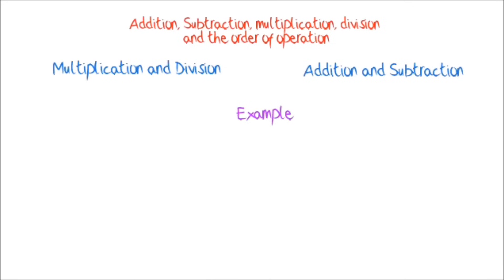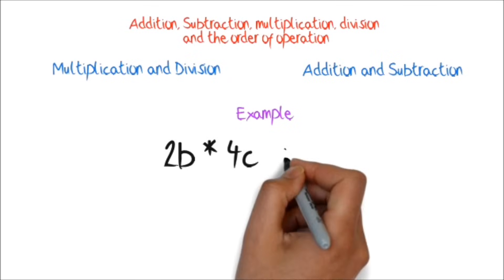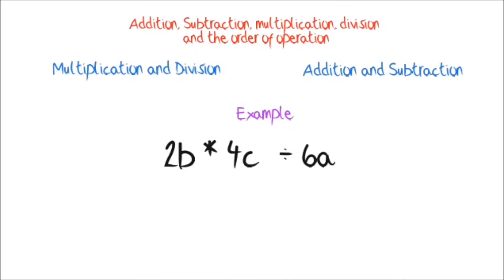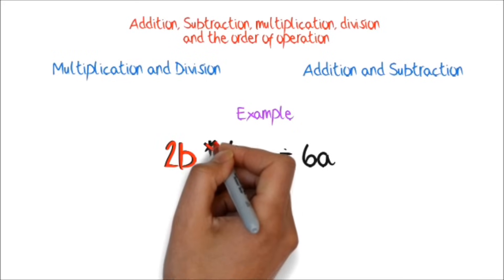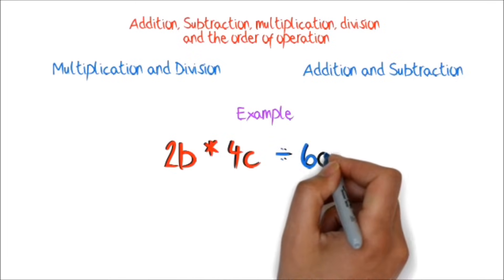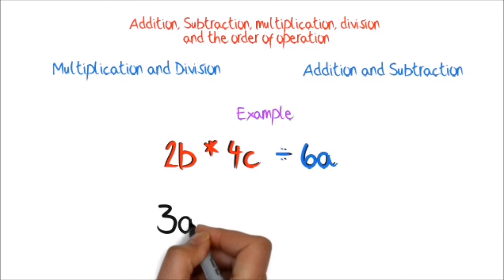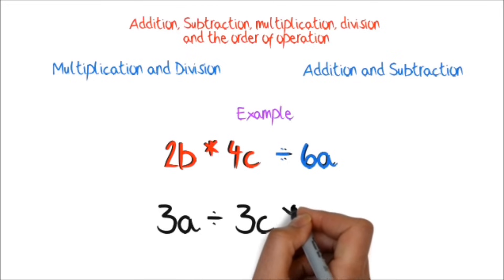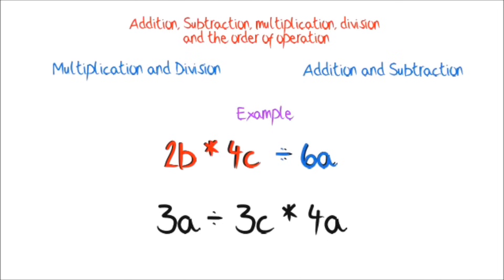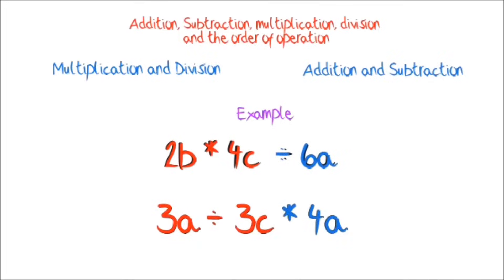For example, if you have 2b times 4c divided by 6a, you will work on the 2b times 4c first, and then divide the result by 6a. Another example: if you have 3a divided by 3c times 4a, you will work out the 3a divided by 3c first, and after that you will multiply by 4a.